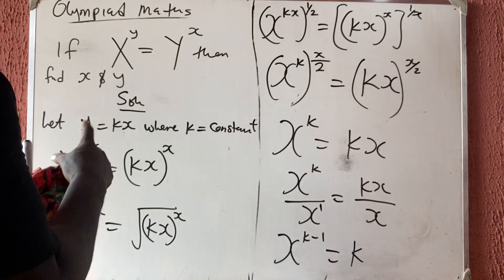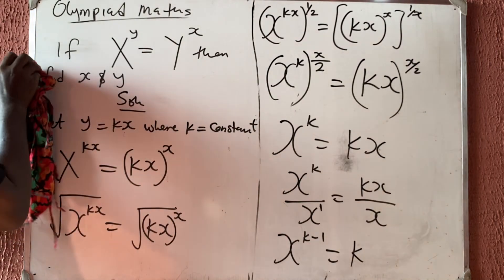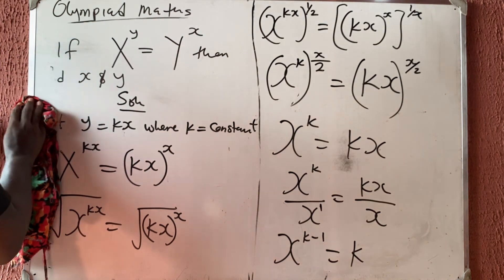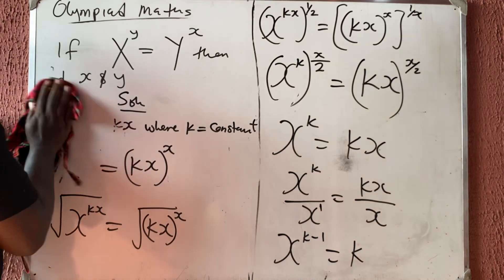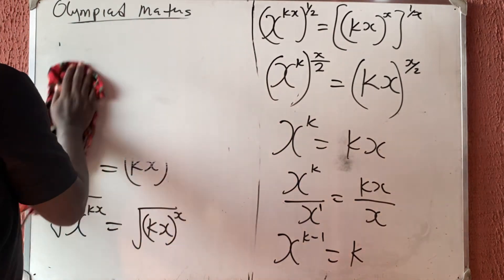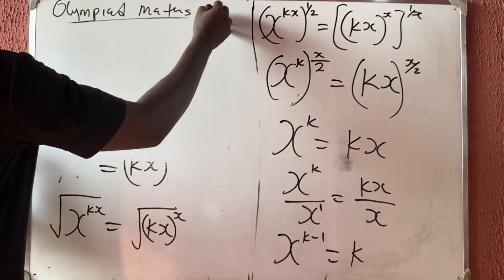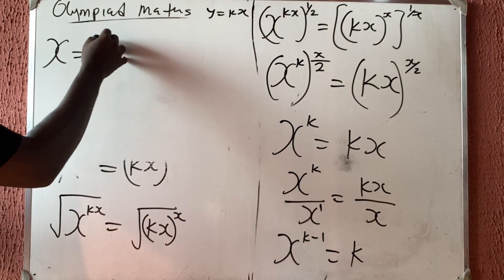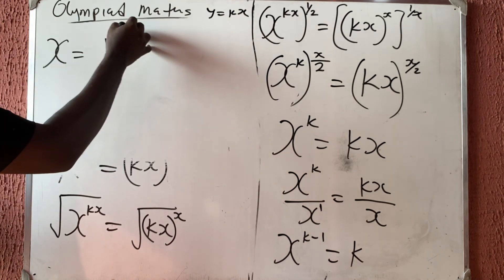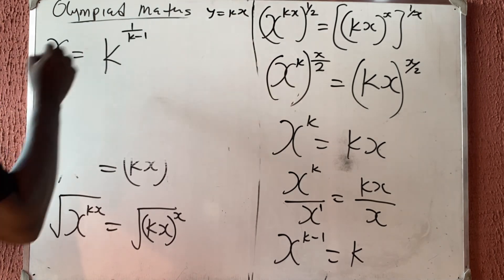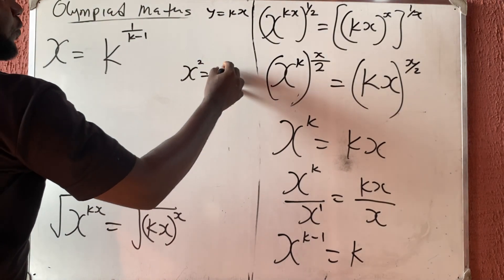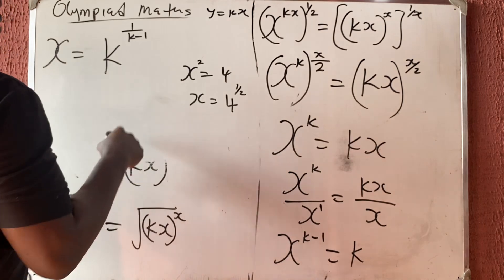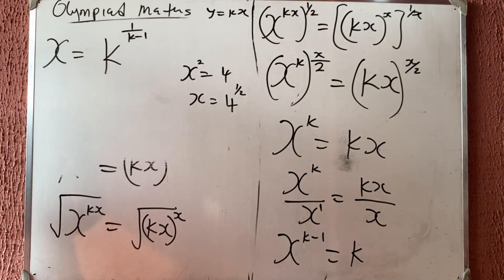When k crosses to the other side it becomes the root of that, that is one over k. So x on its own is now k raised to the power one over (k minus one), because if x squared equals 4 then x equals 4 raised to the power one-half. So we have found x.